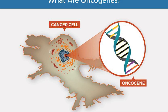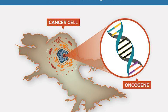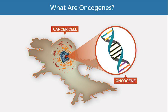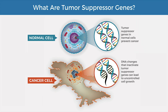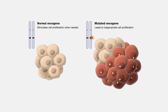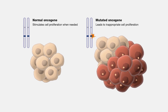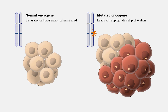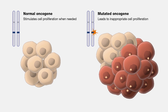One important concept in cancer development is the concept of oncogenes and tumor suppressor genes. Oncogenes are genes that promote cell growth, while tumor suppressor genes help to regulate cell growth and prevent the development of cancer. Mutations in oncogenes or tumor suppressor genes can lead to the development of cancer by disrupting the normal regulation of cell growth and division.